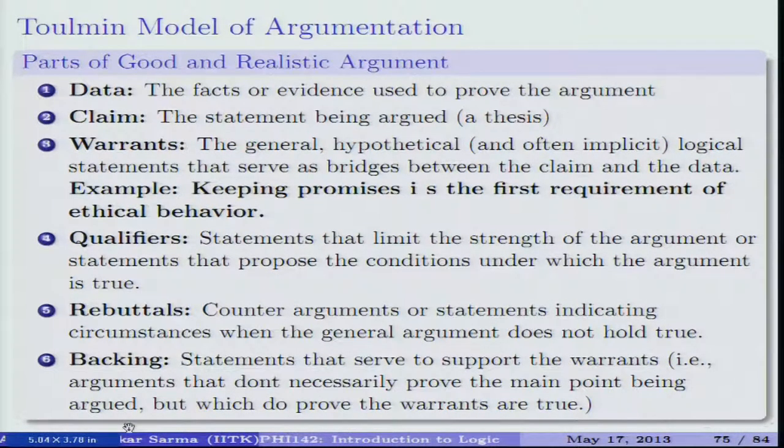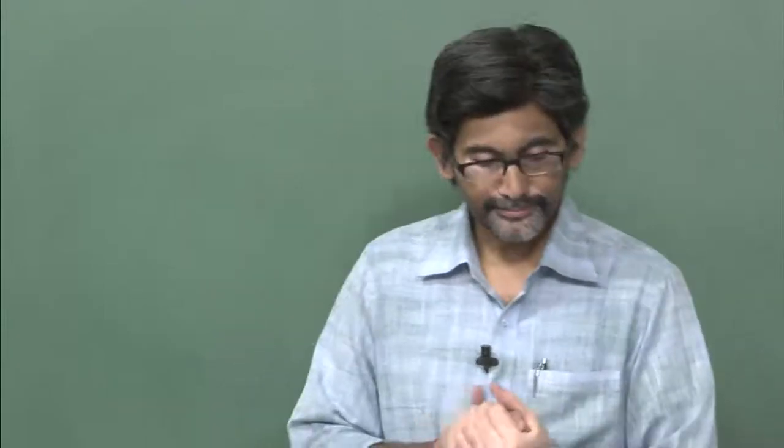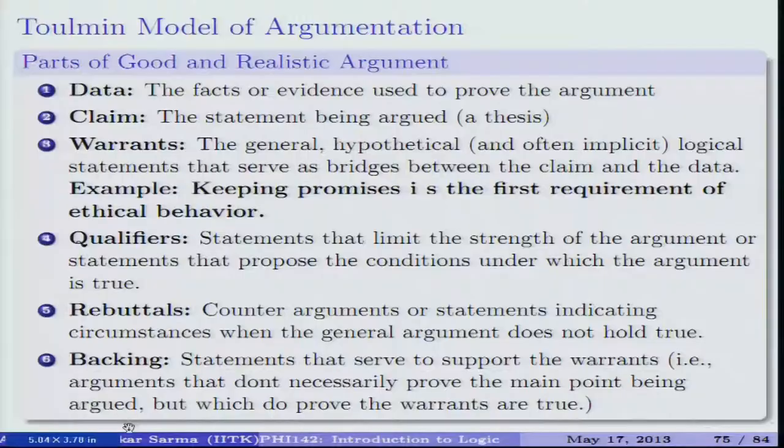A good argument should have qualifiers, and a good arguer should also know the limits of his argument. A good arguer presents the limitations of his claims. Qualifiers are statements that limit the strength of the argument, propose the conditions under which the argument is true, or state the conditions under which it might be false — that is, stating exceptions.